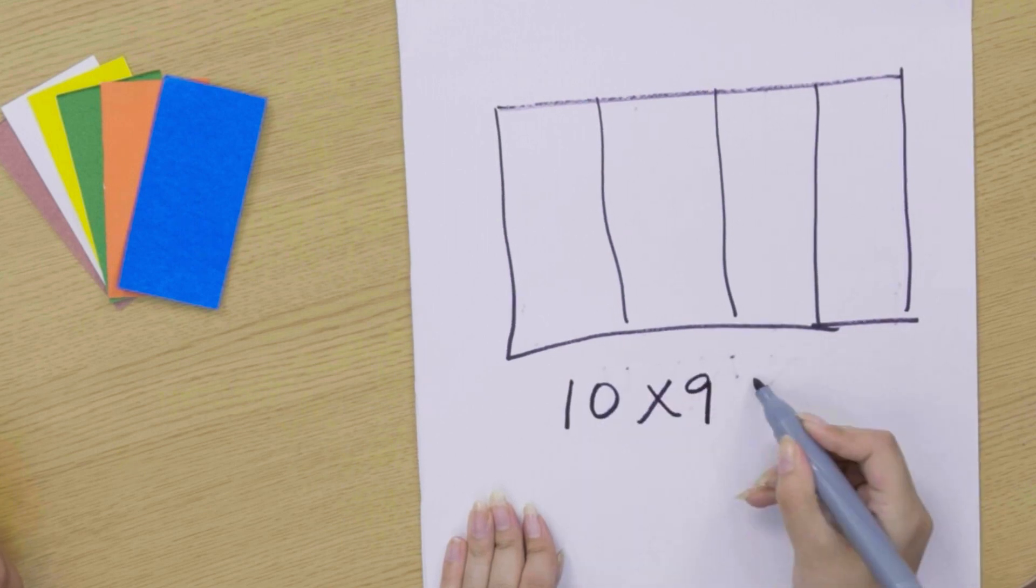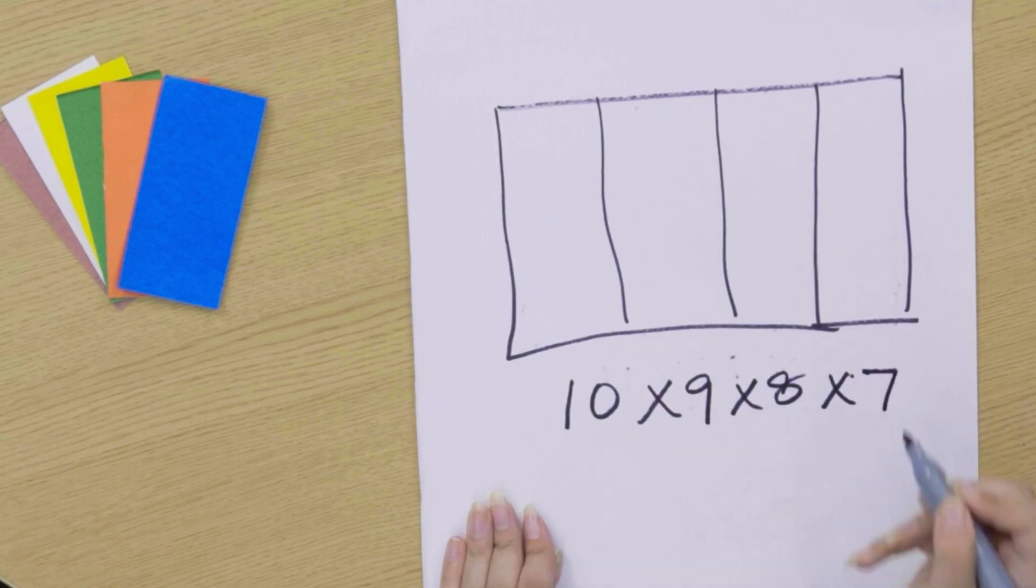Yeah. So many flags. And now what if you had ten colors and four strips for each flag? Ten times nine times eight times seven. Awesome. That's 5040 flags. Whoa.